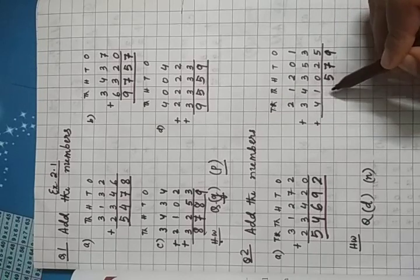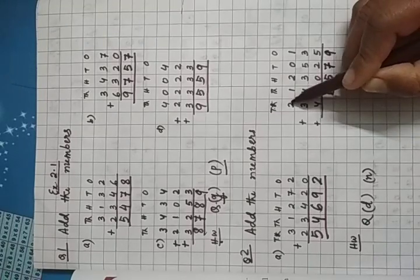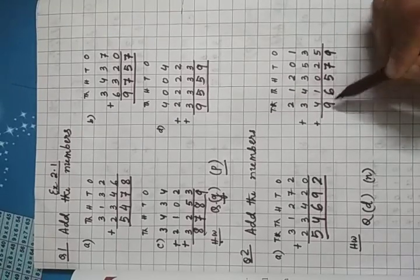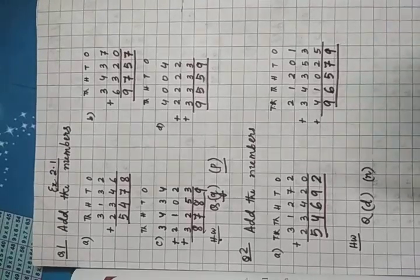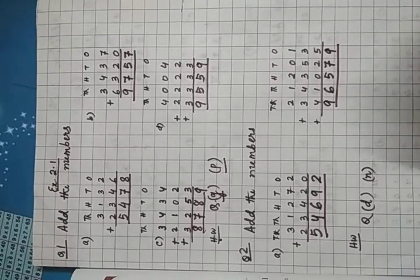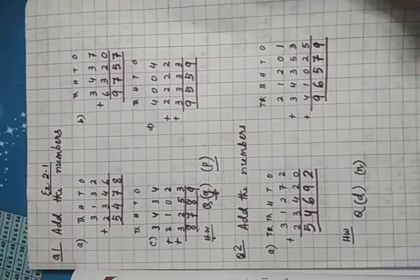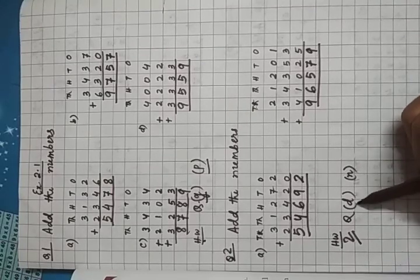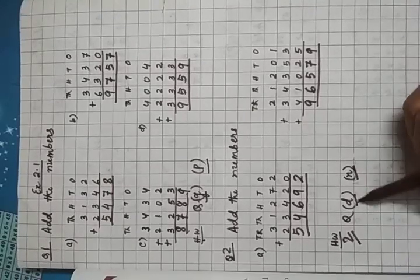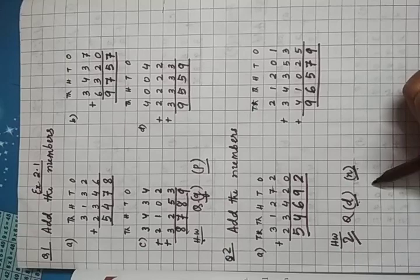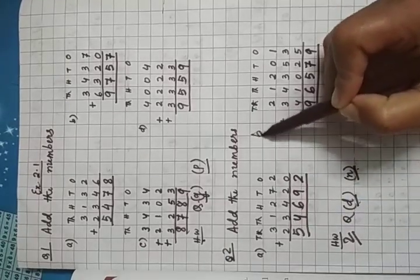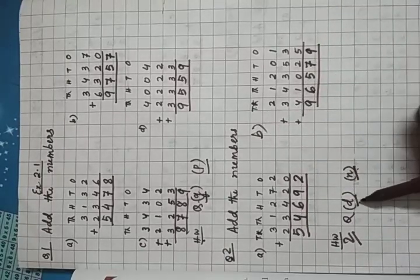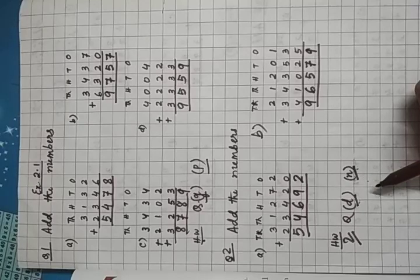4 plus 1, 5 plus 1, 6. 3 plus 2, 5 plus 4, 9. And what is the answer? 96,579. Yes. And in question number 2, you mark in your book, question number 2, D part and N part. These two questions are your homework. So these two, your classwork and these two questions you have to solve yourself.